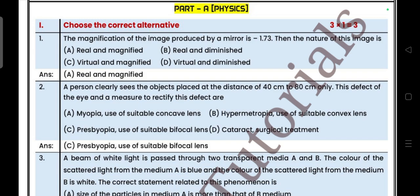First, Part A Physics. Choose the correct answer. Question 1: The magnification of the image produced by a mirror is -1.73, then the nature of the image is real and magnified. Question 2: A person clearly sees objects placed at a distance of 40 cm to 80 cm only. This defect of the eye and how to rectify it.